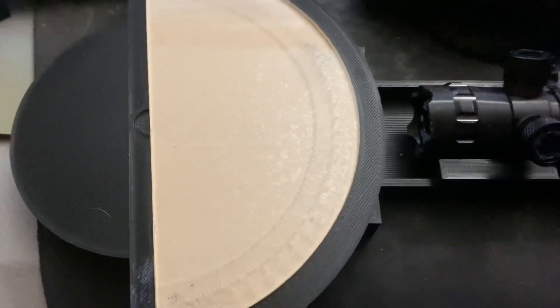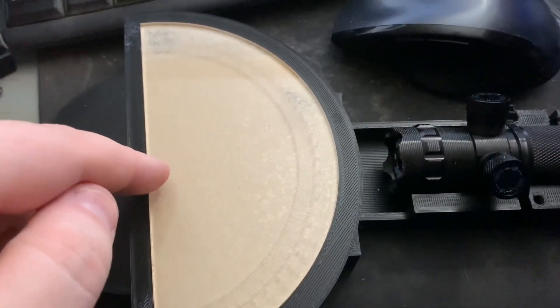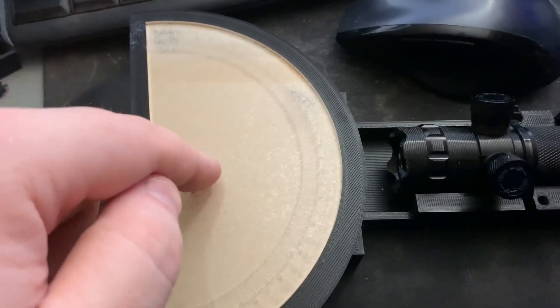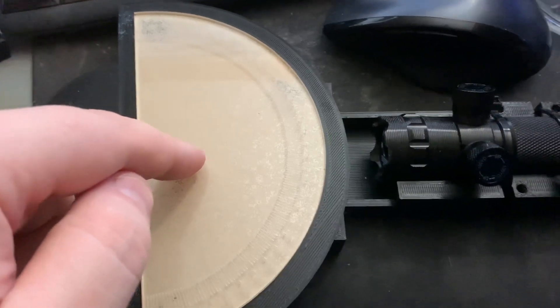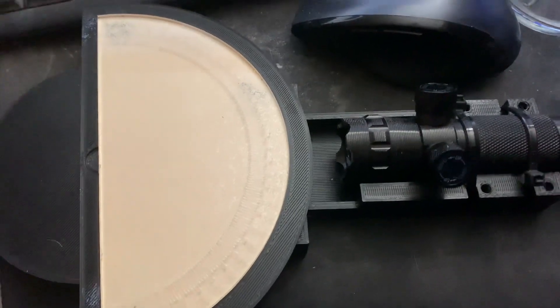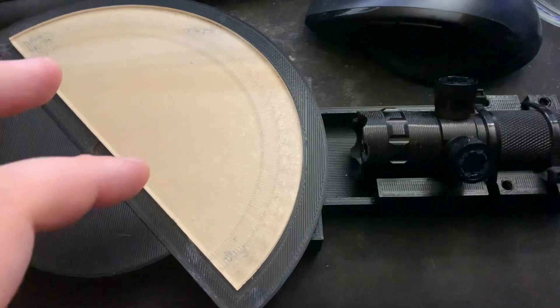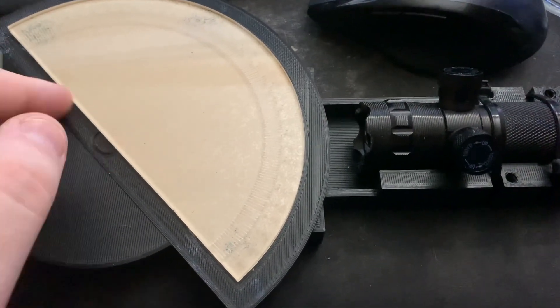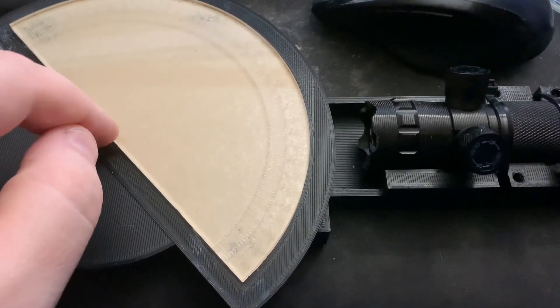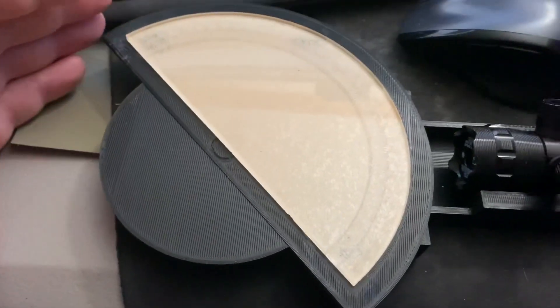Whenever you have two media and you have a light beam going from a material with high index of refraction into a material of low index of refraction, when you hit a certain angle within the material, light will completely reflect off of this boundary and you will get no light leaking out.